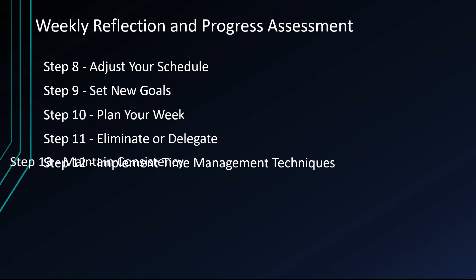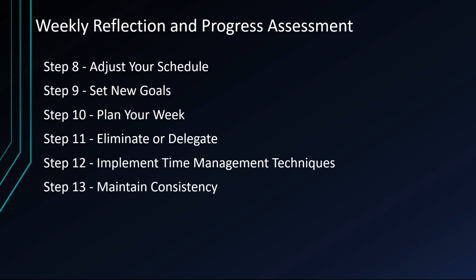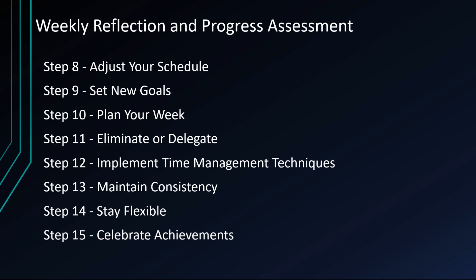Step 13: Maintain consistency. Make weekly reflection and progress assessment a regular habit. Consistency is key to continuous improvement in time management. Step 14: Stay flexible. While planning is essential, be prepared to adjust your schedule during the week as unexpected events and priorities arise. Step 15 — one of the most important steps: Celebrate achievements. At the end of each week, take a moment to acknowledge and celebrate your accomplishments. Recognizing your progress can motivate you to maintain effective time management practices.